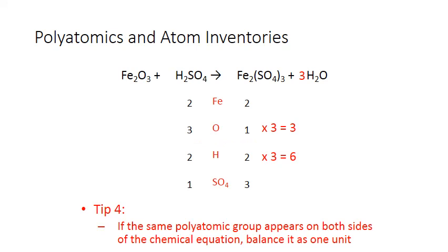Next we'll balance the hydrogen. The easiest thing is to place a three coefficient in front of the formula on the left — that formula is sulfuric acid, H₂SO₄. We end up with six hydrogens on each side, but that three also multiplies by the sulfate group: one times three gives three sulfate polyatomics on each side. Now we have the same numbers on each side, so this chemical equation is balanced.